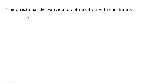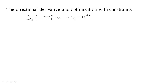Let's think about the directional derivative again. The directional derivative of f in the direction of some unit vector u equals the gradient of f dotted with u. Since this is a dot product, we get the length of the first vector times the length of the second vector — which is a unit vector — times the cosine of the angle between them.